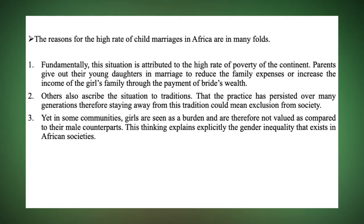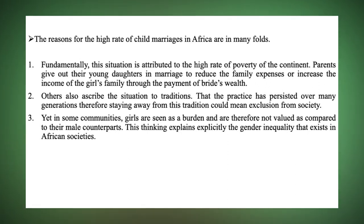Child marriage occurred for various reasons. The first is poverty — families without financial capacity to take care of their young girls married them off early, especially to wealthy men who could care for the child. In some situations, the support extended to other family members. Another reason is that child marriage was seen as a way of alleviating the burden of raising a young girl.